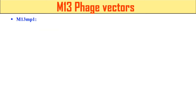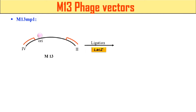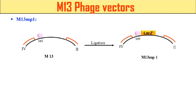Now, what are the vectors which are based on this M13 phage? The first example is M13 MP1. In this case, like this is the M13 phage genome, here the origin of replication (ori) is present. In order to make M13 MP1, we ligate the lacZ site into its genome. It can now be called the M13 MP1 vector, meaning it has lacZ, which is a gene that codes for the enzyme beta-galactosidase. This gene helps in the identification of the vector or host which contains this vector.